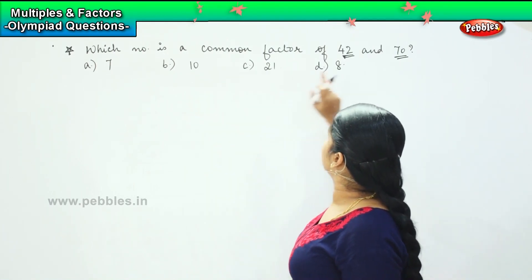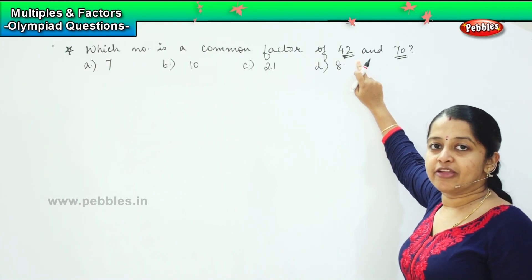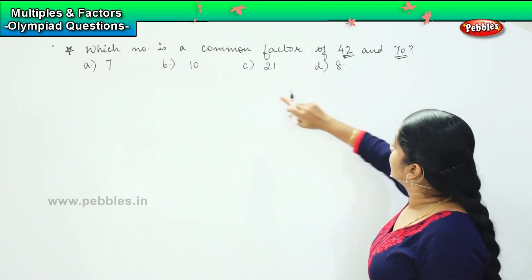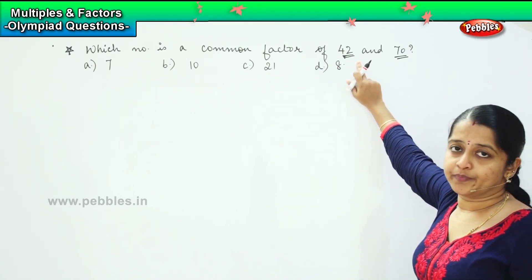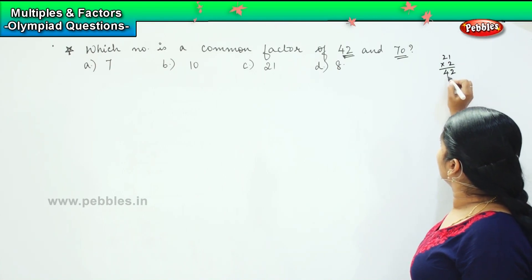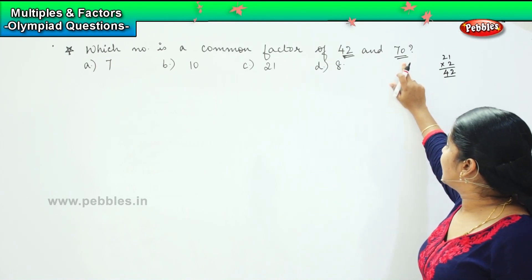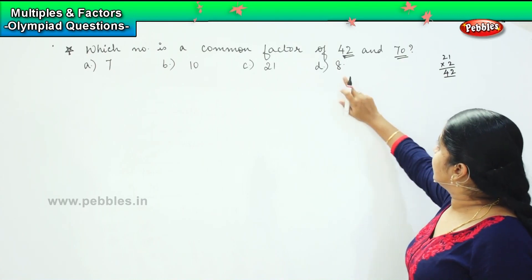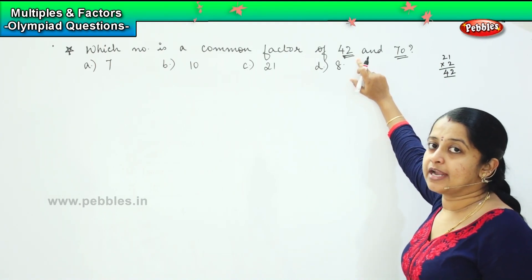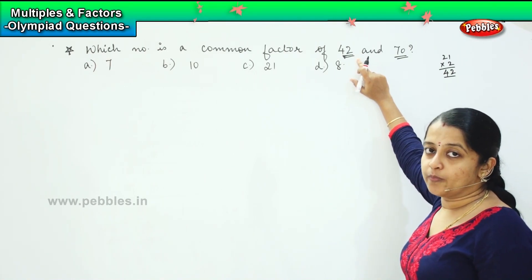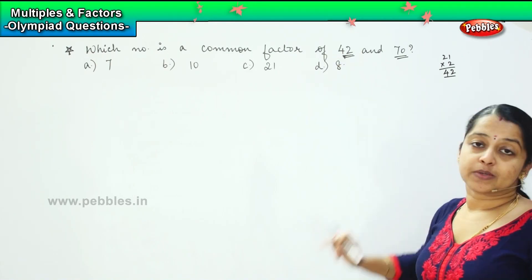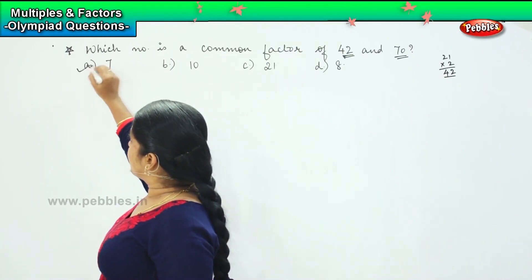Let us try the other options. Is 10 a factor of 42? No, it is not divisible — 10 divides 40, not 42. Is it a factor of 70? Yes. Coming to 21: is it a factor of 42? Yes. Is 21 a factor of 70? No, it is not. Coming to the last one, 8: is 8 a factor of 42? No — 8×5 is 40, but here it is 42. So 8 is also not a factor of the given numbers. My right answer is option A, 7.